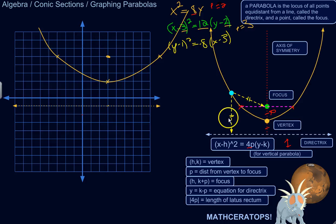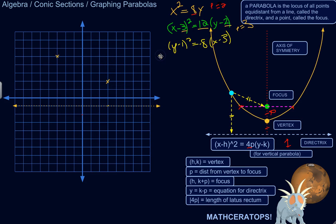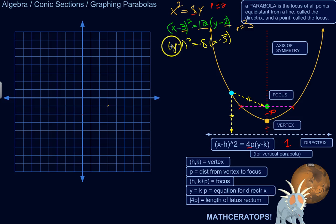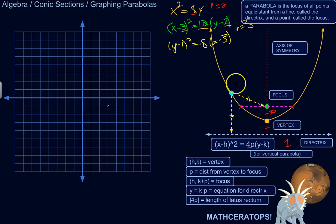Now let's try one that opens to the left or to the right. The standard form looks a little different. First question: what's the orientation of this parabola? It's y minus something squared equals something times x minus something, without the square on x. So the x and y parts are reversed — this is a parabola that opens either to the left or to the right. The sign of p will tell us the exact direction.